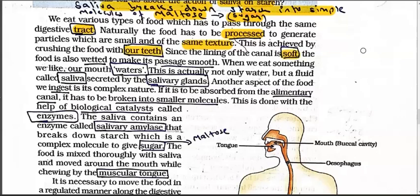When we eat something we like, our mouth waters - this is actually a fluid called saliva, secreted by salivary glands. There are many types of glands in our body: salivary glands in our mouth produce saliva and are located under our tongue; sweat glands are in the inner layer of our skin; and there are also liver glands, pancreatic glands, and gastric glands - each producing something specific.